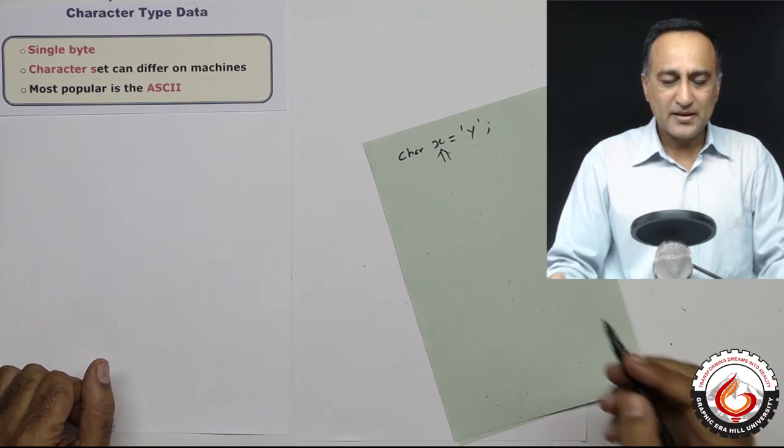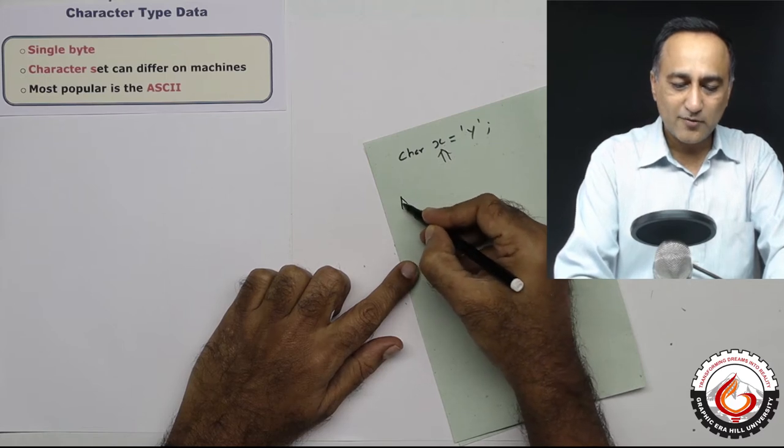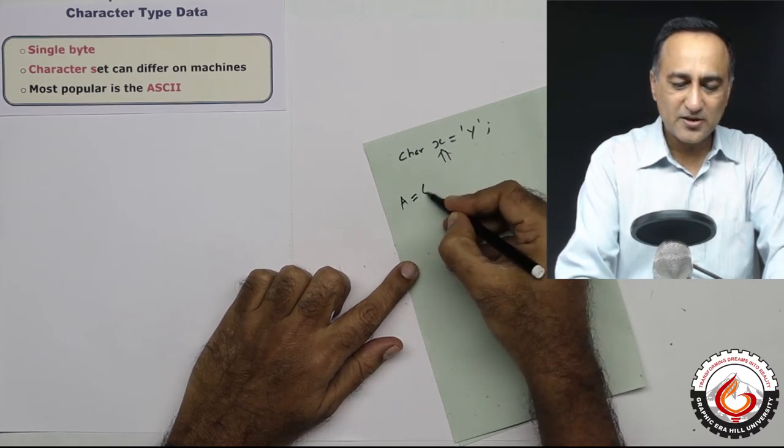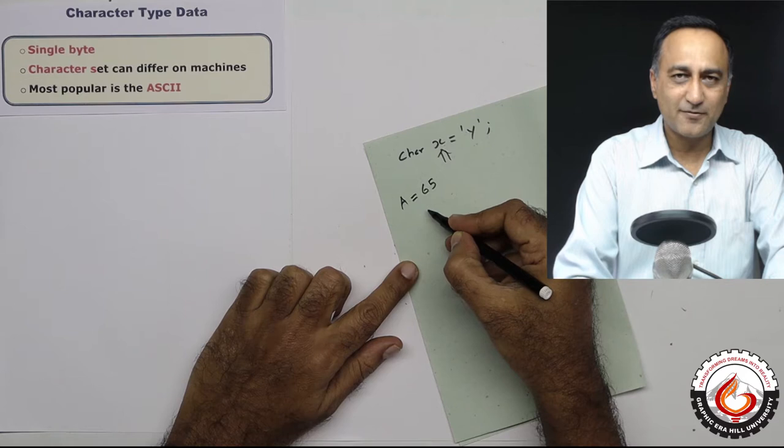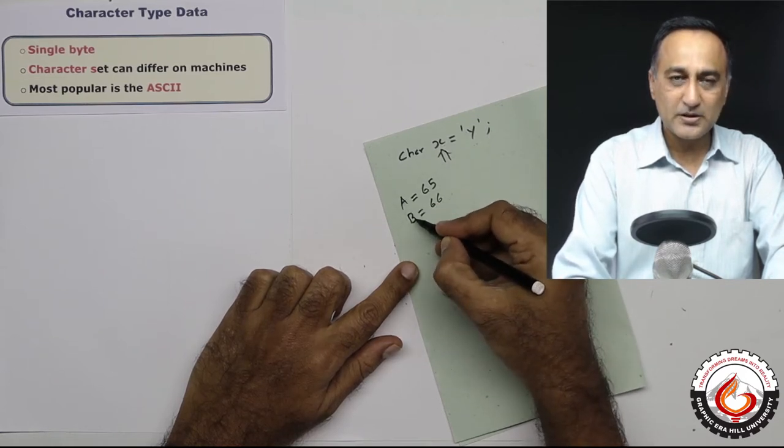What I mean by that is there is a coding system to represent all the characters on your keyboard. For example, A is represented with the decimal value 65. B is represented with the decimal value 66. This is capital A and capital B.